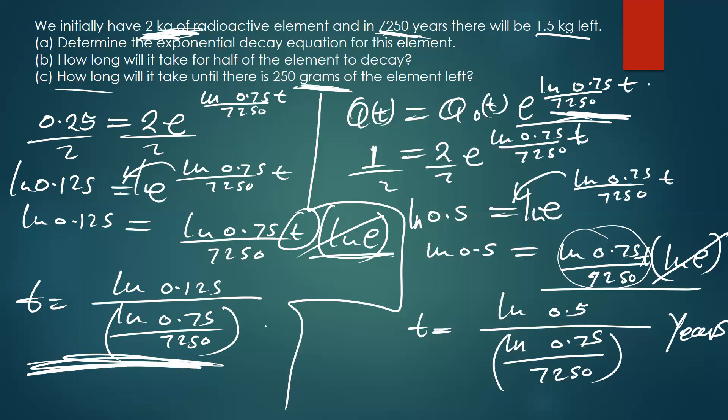So the solution is t = ln(0.125) / [ln(0.75) / 7250]. If you have a calculator, you can punch this in and get the final numerical answer. Thank you very much — see you in the next tutorial. If you have questions on what we learned today, you can ask them at the start of tomorrow's session before we begin binomial, and I'll give time for questions on logarithms.